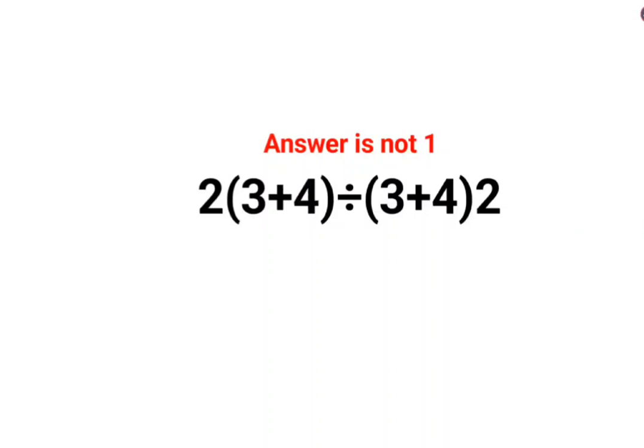Welcome everyone. Please understand the answer will not be one. Yes, a lot of people thought the answer should be one because this is two multiplied by seven divided by seven multiplied by two.